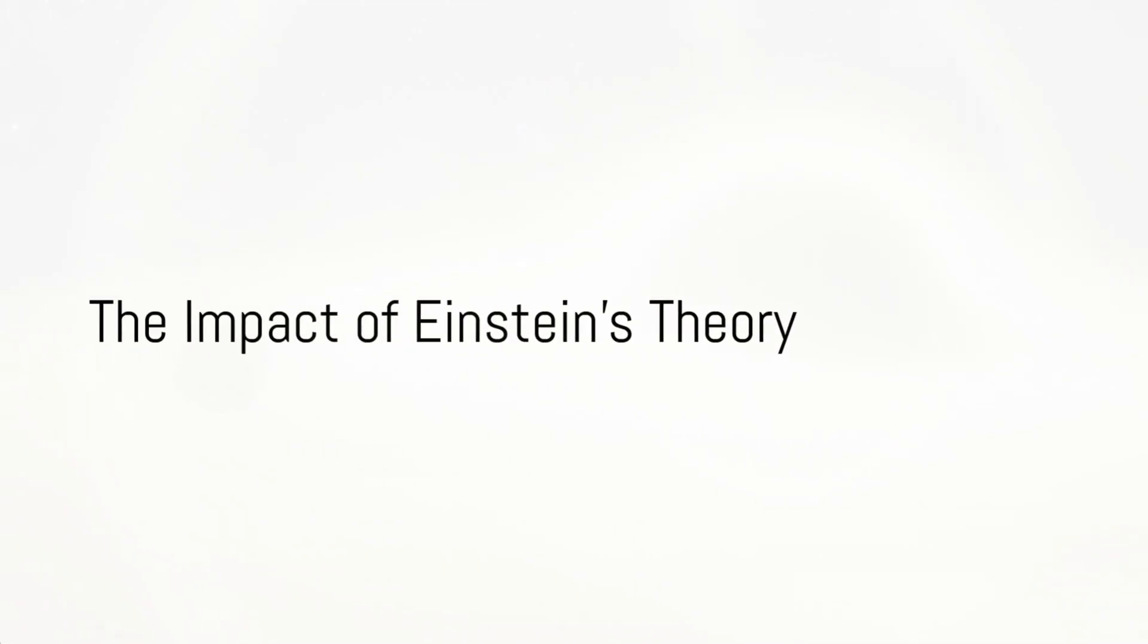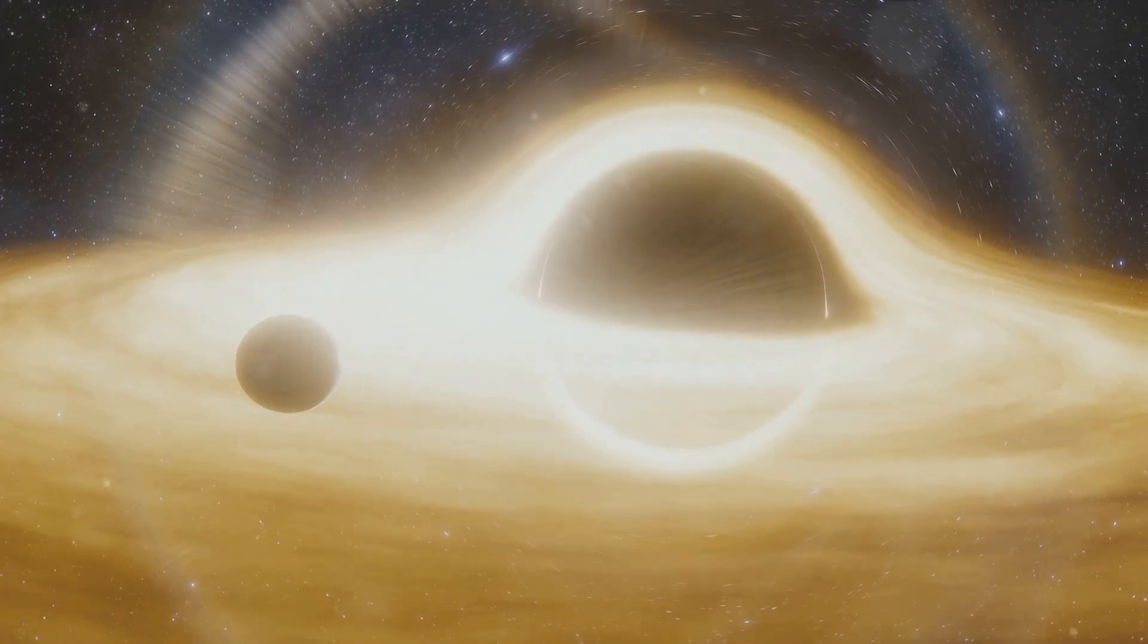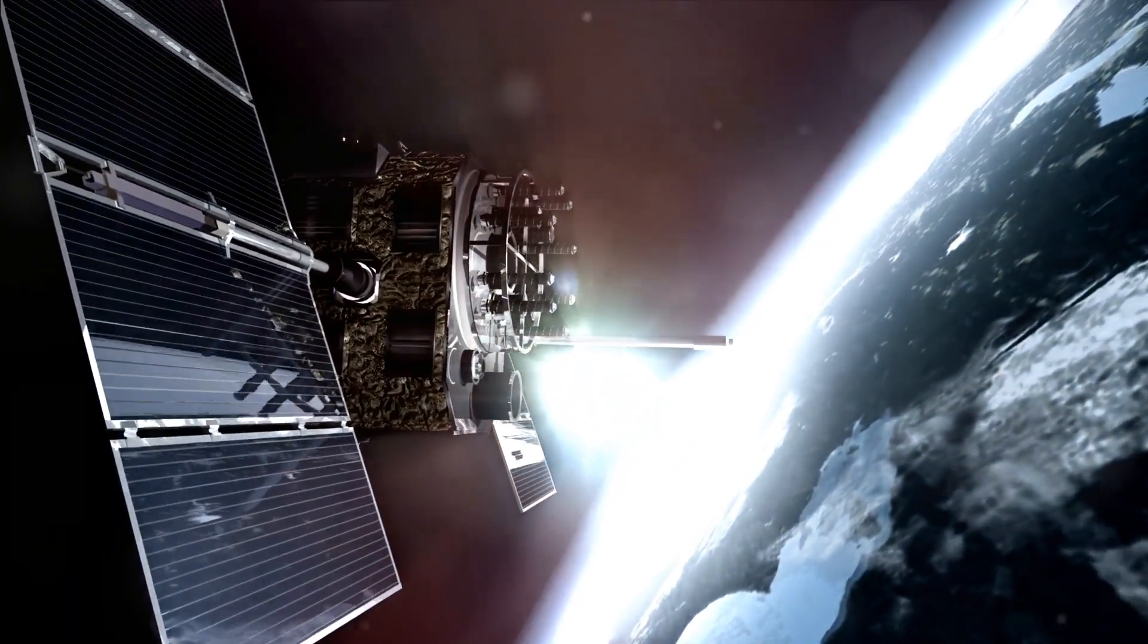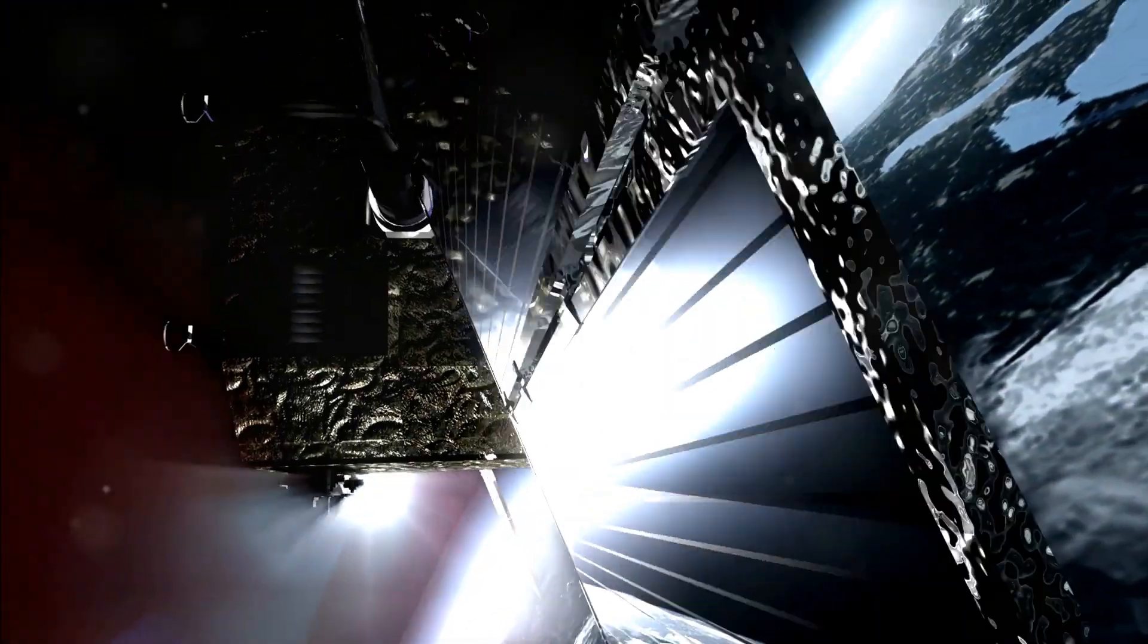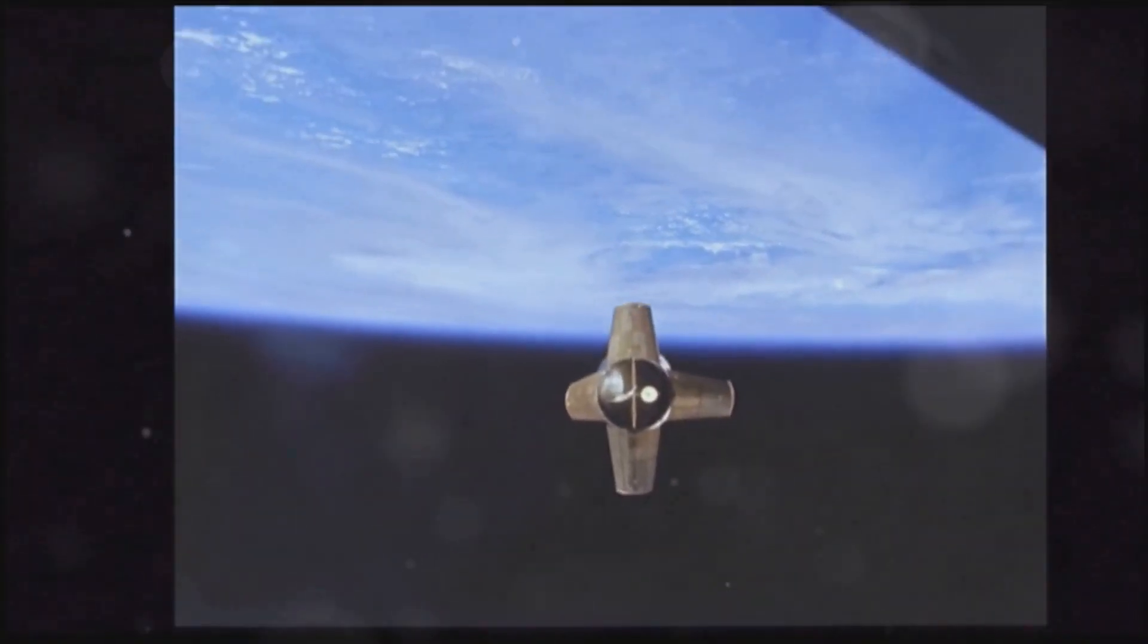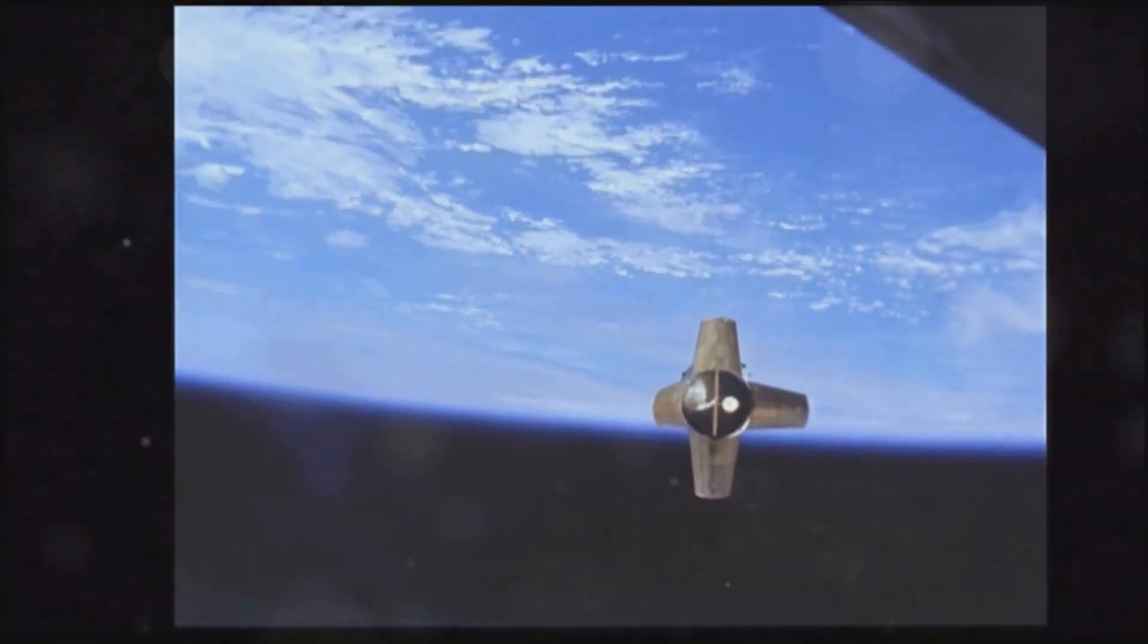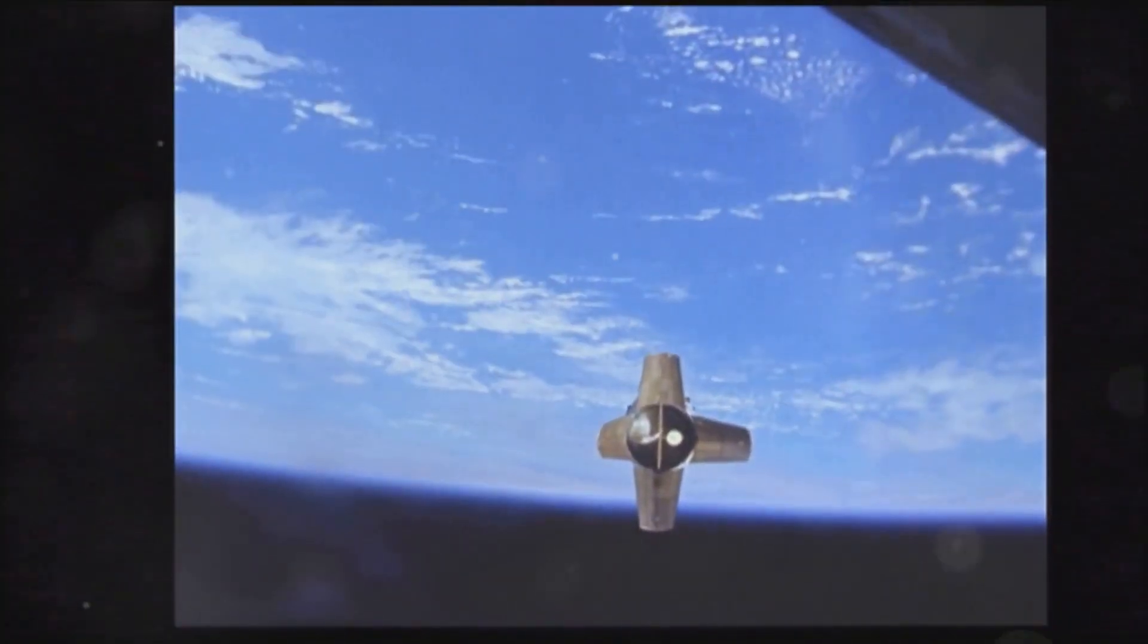But why does all of this matter? How has Einstein's theory shaped our understanding of the universe? The impact of Einstein's theory of relativity is far-reaching, touching corners of our existence we might not immediately consider. Take, for instance, our GPS technology. The accuracy of these systems, which many of us rely on daily, hinges on the principles of Einstein's theory.